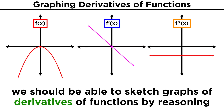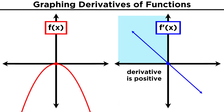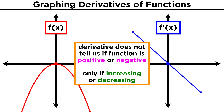So it is very important, not just for physics but even just for doing math, that we can draw the graphs of derivatives of functions strictly by reasoning this way, and that we can look at graphs of derivatives to understand things about the original function. If a function's derivative is positive, the function is increasing at that point. If the derivative is negative, the function is decreasing at that point. We can't say whether the function itself is positive or negative — just whether it is increasing or decreasing.